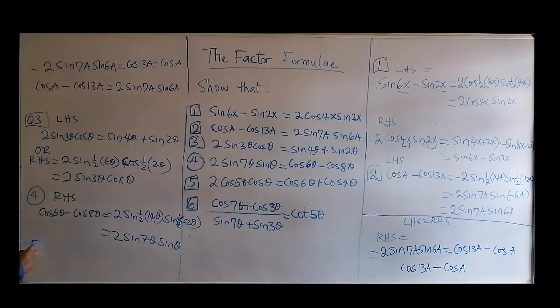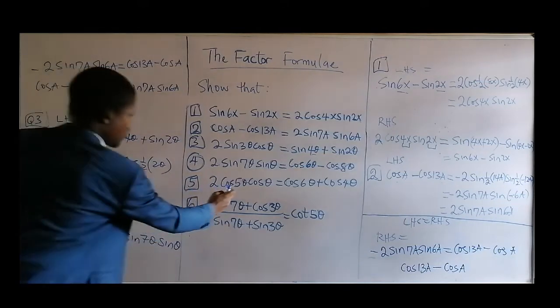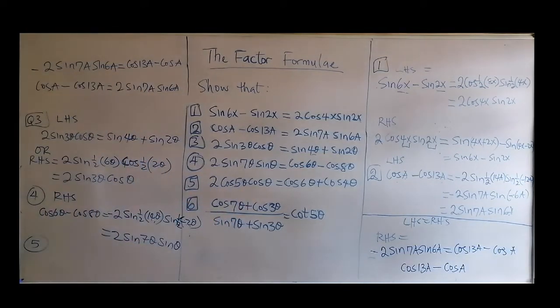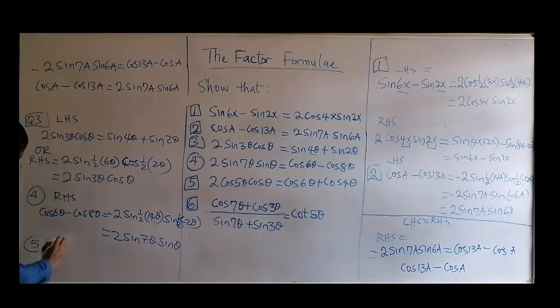Question five. We have a product of cosines. From the left-hand side you have 2cos(5θ)cos(θ).